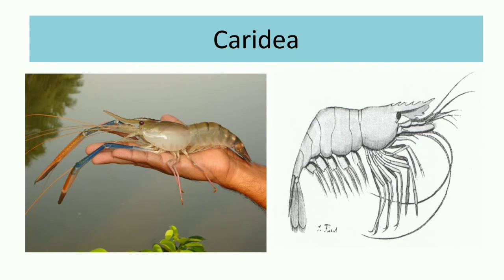In Caridea, it mostly consists of commercially important freshwater prawns. As you can see in the diagram, this photo shows a freshwater prawn, also called Palaemon or Macrobrachium. The diagram also shows Alpheus. These prawns have two chelate legs, and their gill filaments are thin and plate-like.